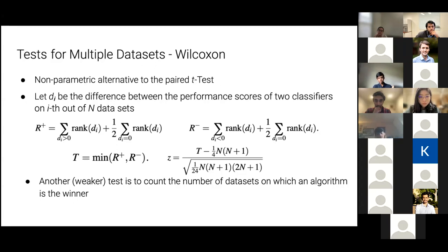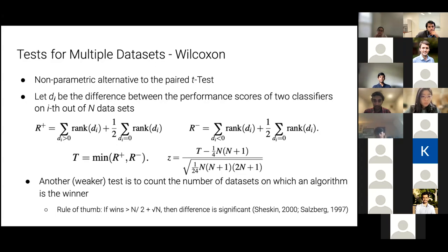This is the Wilcoxon test, and it's a little complicated. A better rule of thumb is a much simpler test: just take all the performances, look at them in a grid or table, and count the number of times one model wins out over the other. If that number is greater than N/2 plus sqrt(N), the difference is significant. This looks like a much easier result to apply, although it's not particularly powerful. For example, with 20 datasets, you'd have to be better on 14 of them — at that point you can say with significance that one model is much better.